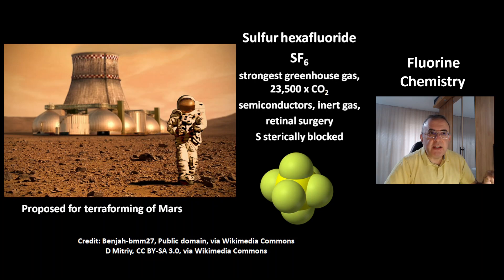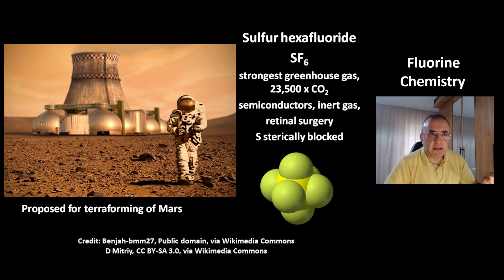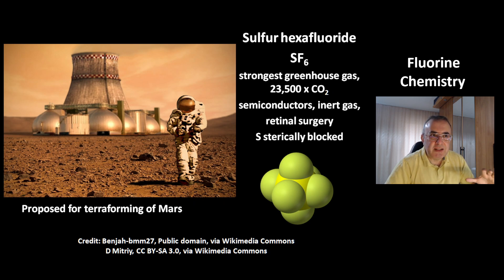This is sulfur hexafluoride, SF6 — the strongest greenhouse gas, 23,500 times more potent than carbon dioxide. Sulfur hexafluoride is used for semiconductors as an inert gas, and for retinal surgery. On the right you can see the structure of the molecule: the sulfur atom in the center is surrounded on all sides by fluorine atoms. It is sterically blocked, which is why this compound is so inert.